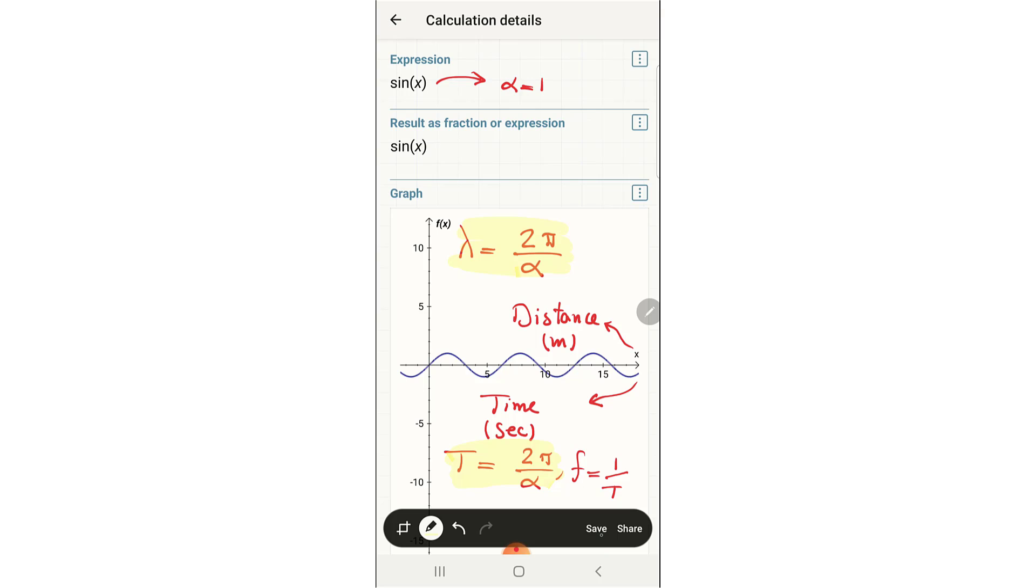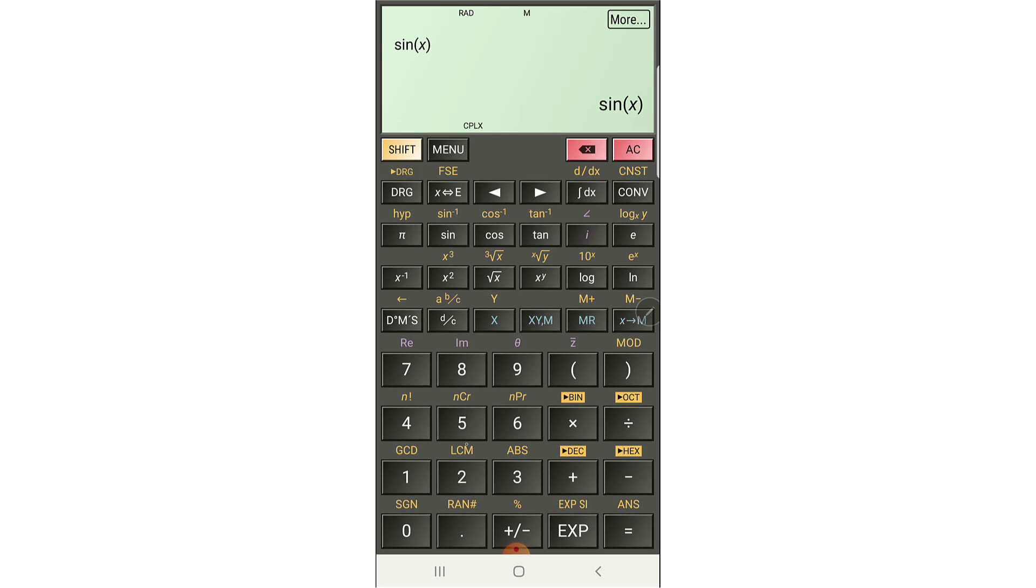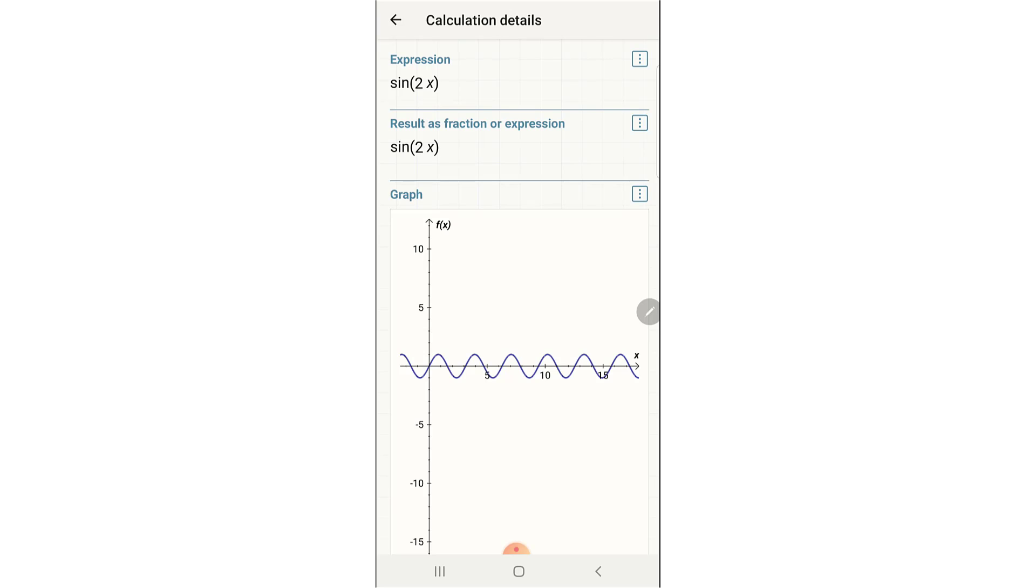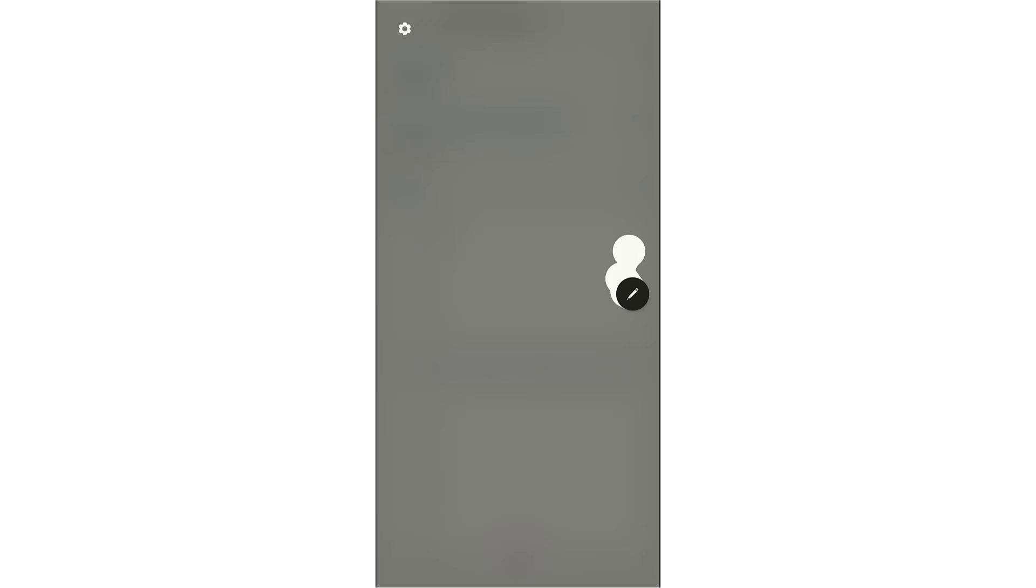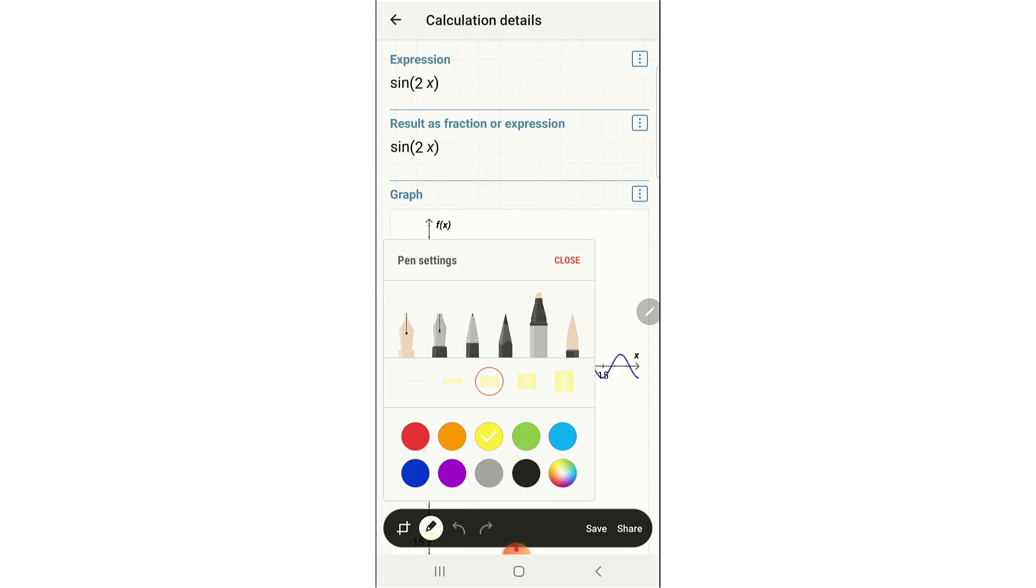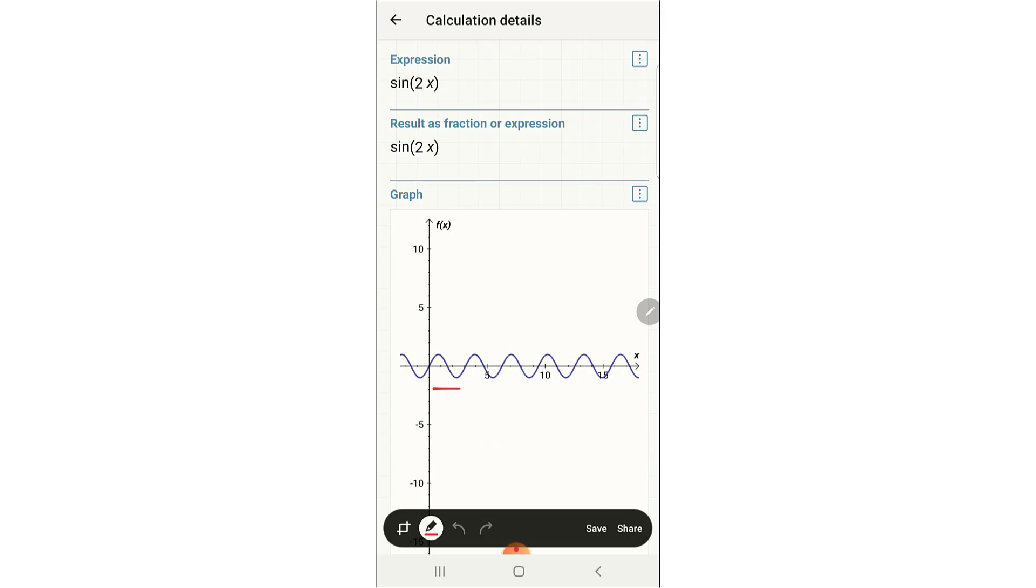Let me just show you another example to emphasize the concept of frequency. Consider sine 2x. Okay, as you can see, as you increase the coefficient, if the coefficient is greater than one, the wavelength decreases or the frequency increases. Here, this is the wavelength. And I already showed you how to obtain the wavelength of this function.